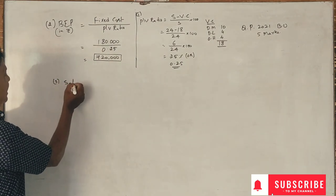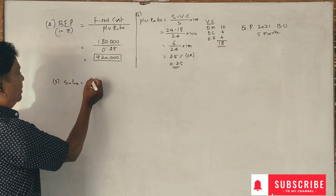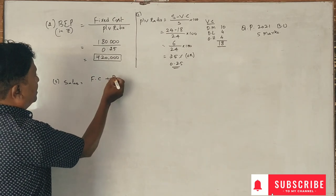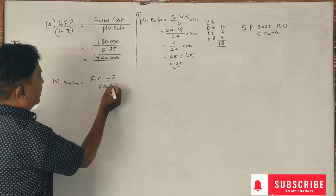Sales required is equal to fixed cost plus profit divided by PV ratio.